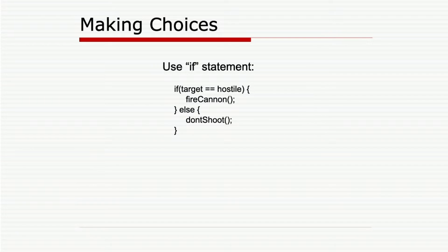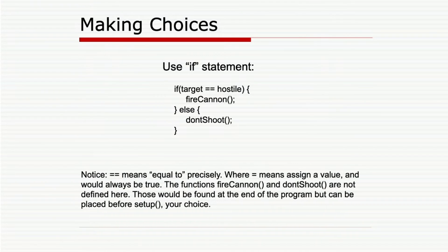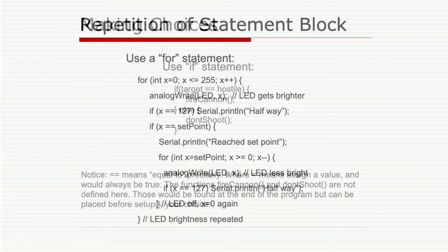Here's the if statement. The if statement is our brancher — this is how we go from one place in our program to another. In this case, if target equals hostile, then you go fire a cannon; if it's not, you don't. The double equal means precisely equal, and the single equal sign means an assignment of value.